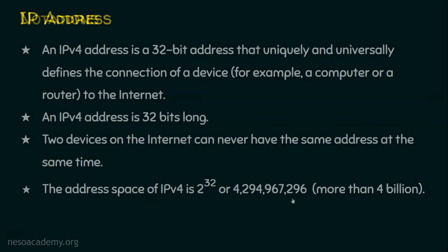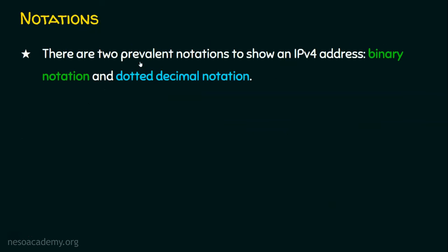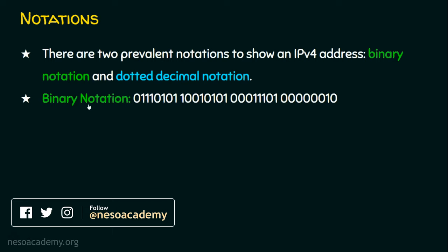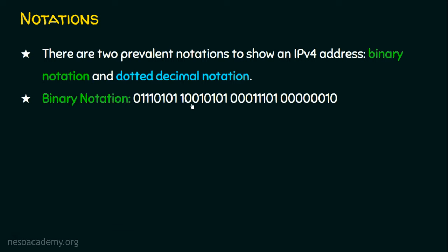Let's see the notations of IP address. Basically, there are two prevailing notations to represent an IP address. Number 1, the binary notation. And number 2, the dotted decimal notation. We have already seen that IPv4 addresses are 32 bits long, so we will have 32 bits in the IP address. We have 4 octets and 4 bytes — Byte 1, Byte 2, Byte 3, and Byte 4. Each byte is of 8 bits, so we can say there are 4 octets in our IP address.